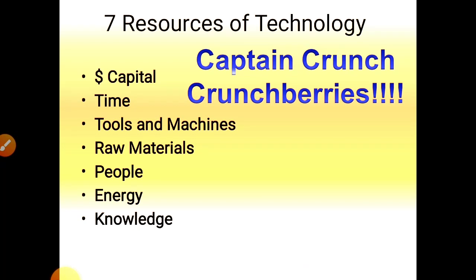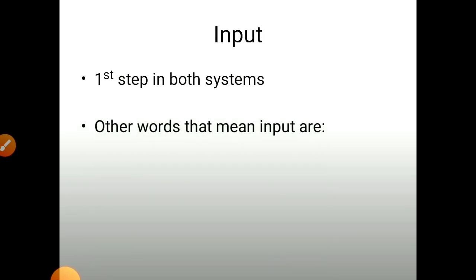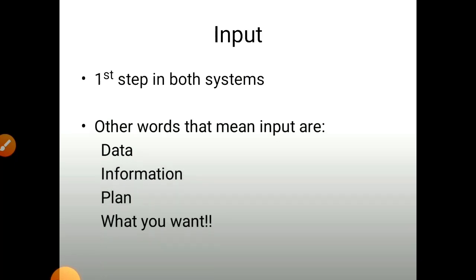Seven resources of technology are shown here: capital investments, time required, tools and machines, raw materials, people, energy, and knowledge. Everything is required for any closed loop system or open loop system. Input is the first step in both systems. Other words that mean input are data, information, plan, or what you want.